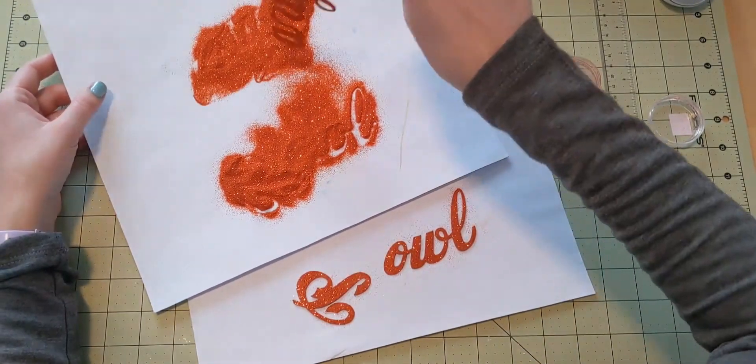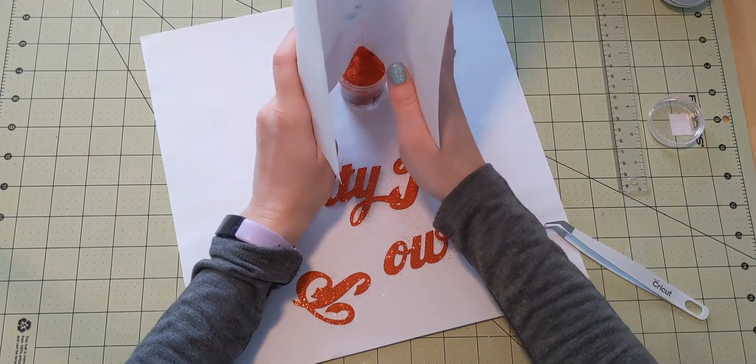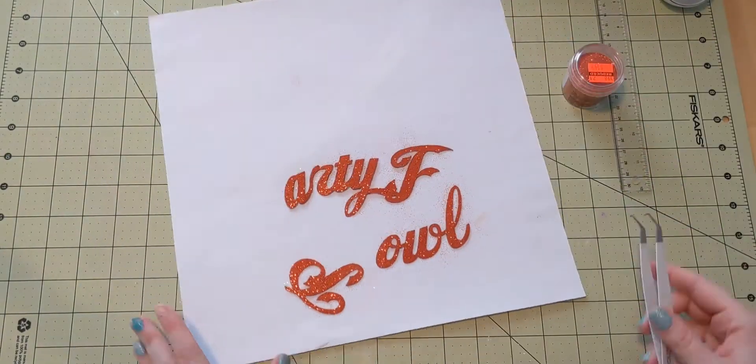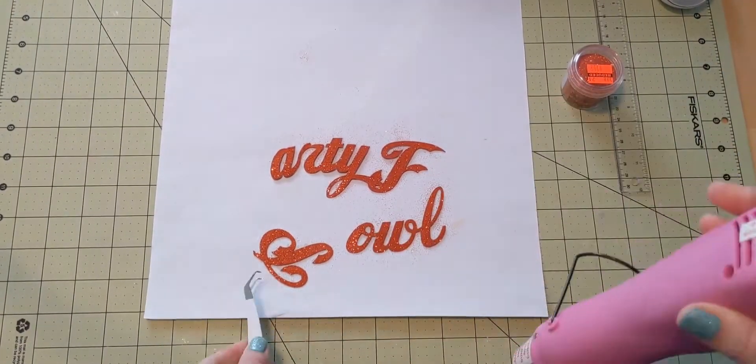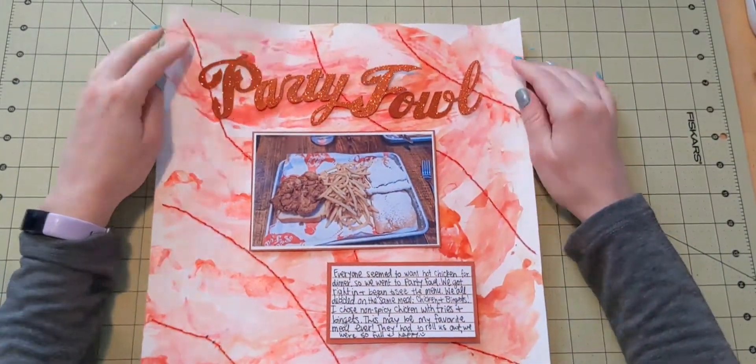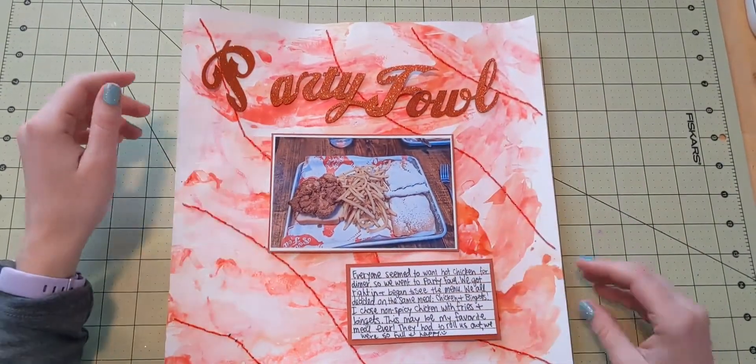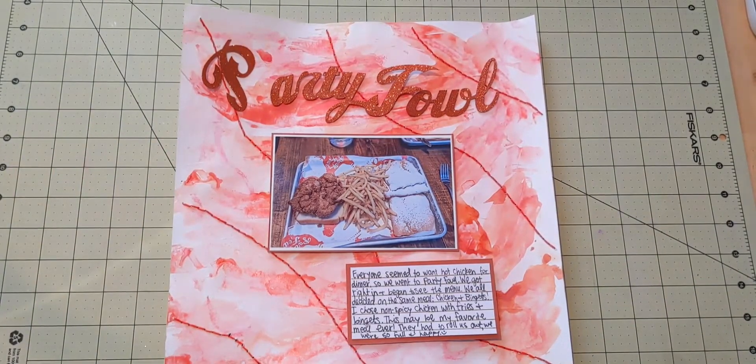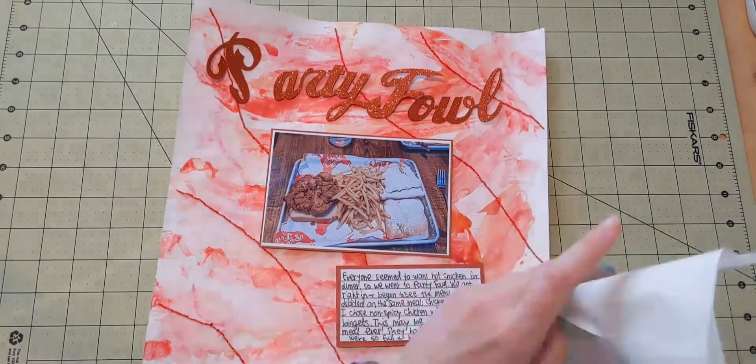It's like an orangey red glitter, and I think it's really pretty. I got it on clearance, and I didn't think I'd ever use it for anything other than Halloween, and then I found a bunch of uses for it. So I go ahead and I heat emboss all of that, and I actually have to go over it and do it twice so that I'm able to get that deep, rich embossing powder all over.